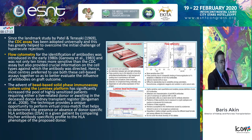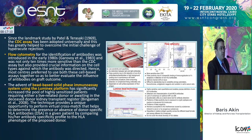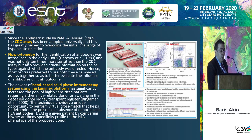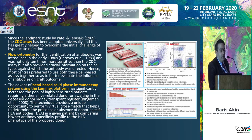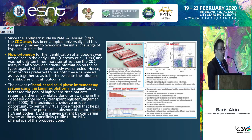Before, we initially had CDC crossmatches to manage humoral rejection, then we started to do flow cytometry and learned about different cell types and different reactions. It was a very important step to have solid phase single-bead studies that enabled us to know all HLA antibodies in a recipient. That enabled us to do virtual crossmatch and progress more.